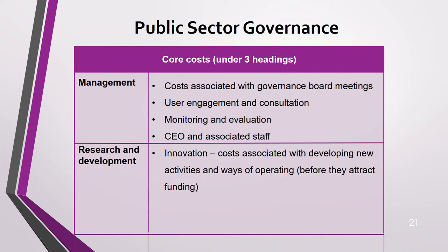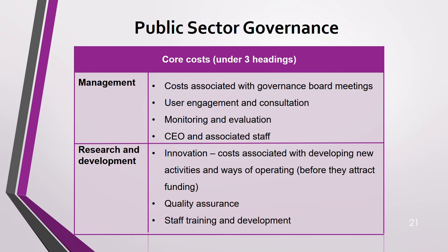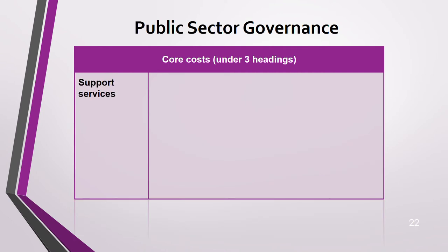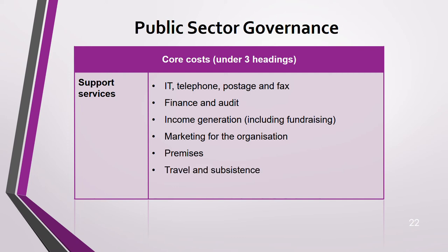The second heading covers research and development and innovation — developing new activities and investing in new technology before funding is attracted — as well as quality assurance and staff training and development. The third heading covers support services such as IT, telephone, postage, fax, finance and audit; income generation including fundraising and marketing; premises; travel; and personnel. These are the core costs that must always be covered.